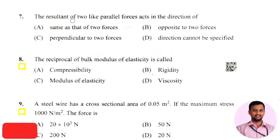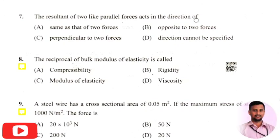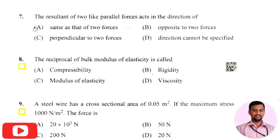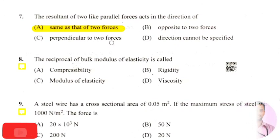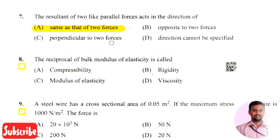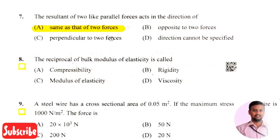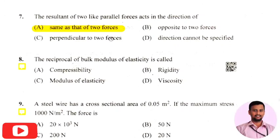The next question: the resultant of two like parallel forces acts in the direction of — the right answer is option 1. The resultant of two like parallel forces always acts in the same direction as the two forces, i.e., in the direction in which those two forces are acting.